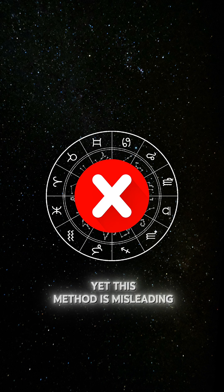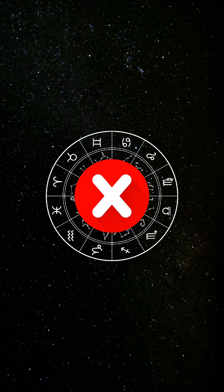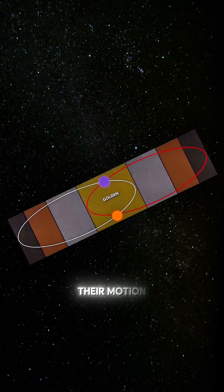Yet this method is misleading, for a binary system does not operate in such a fixed way. As Sirius and the Sun draw closer in their shared binary orbit, their pull on each other accelerates their motion.